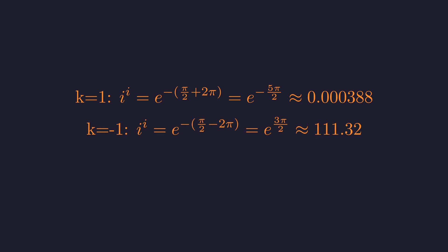When k equals negative 1, we get e to the positive 3 pi over 2, which is a much larger number, approximately 111.32.